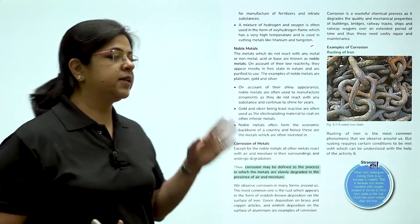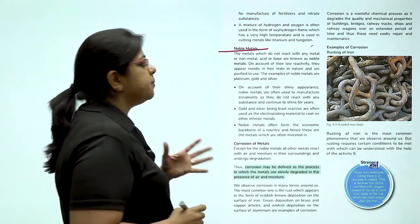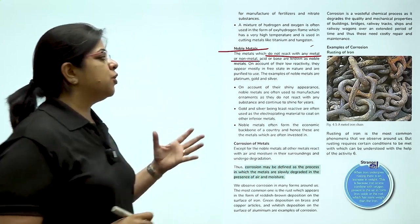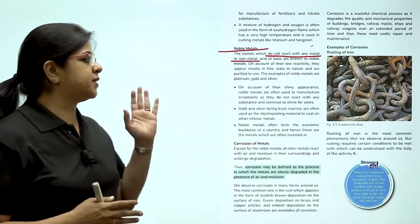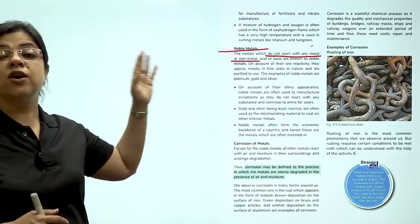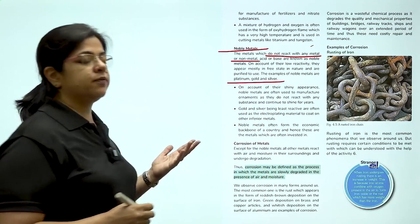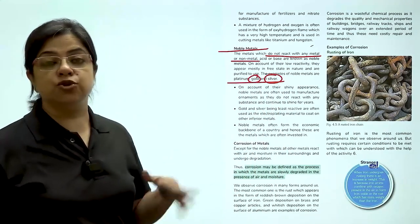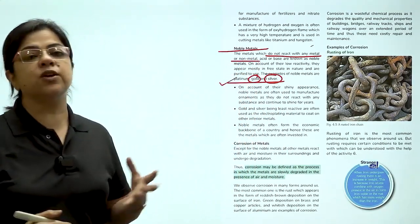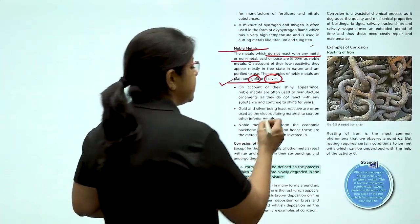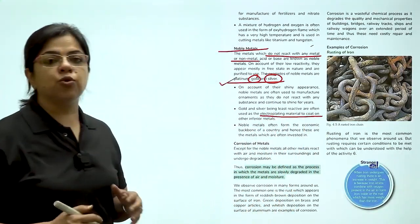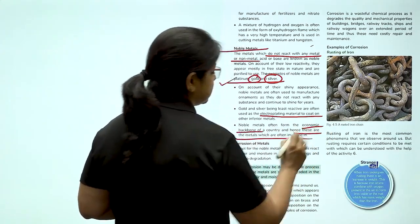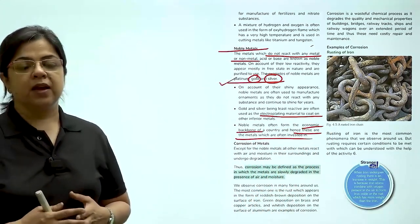Having understood different metals and non-metals, let us also understand what are noble metals. Noble metals are the metals which do not react with any metal or non-metal. They are very low on the reactivity series and that is the reason they are known as noble metals. Examples are platinum, gold and silver. We all know that gold and silver on account of their shiny appearance are used in making jewelry. Nowadays, platinum is also extensively used in making jewelry. They are also used in electroplating material to coat over other inferior metals. And they form the economic backbone of the country and these metals are often invested in.